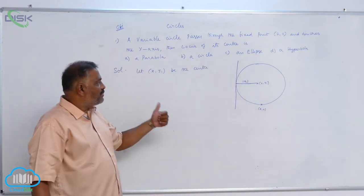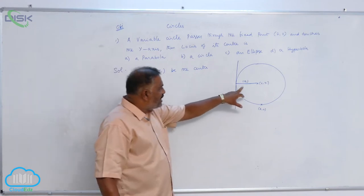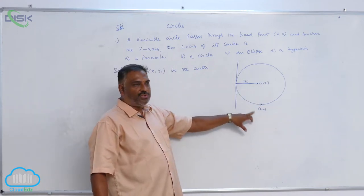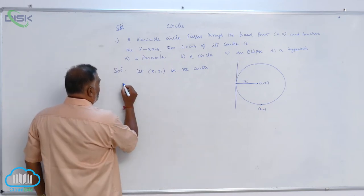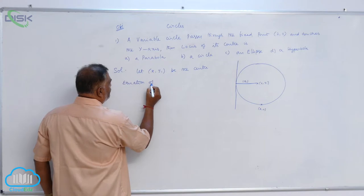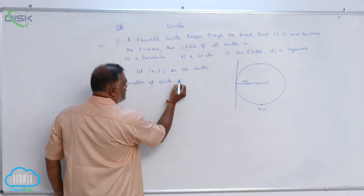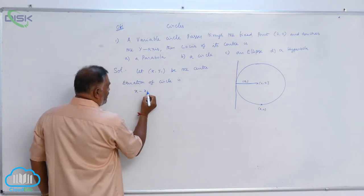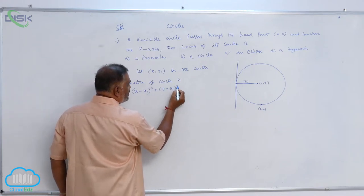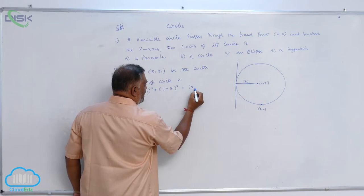So straight away you can observe the point. You have the radius, you know the center and circle passes through (2, 0). So equation of circle is (x - x1)² + (y - y1)² = |x1|².